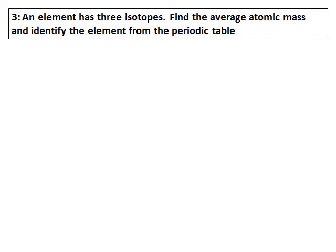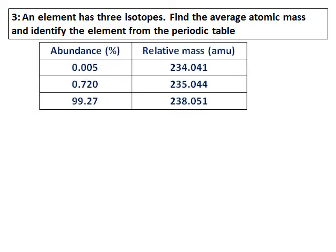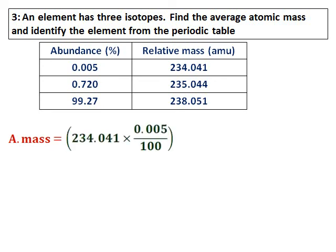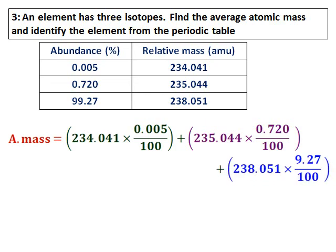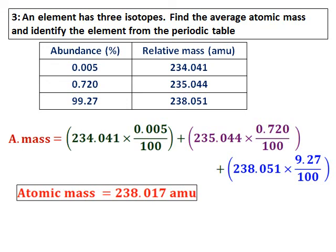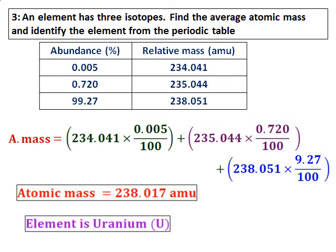The next question: an element has three isotopes. Find the average atomic mass and identify the element from the periodic table. The percentage abundance and relative mass are given in the table. This is similar to the previous questions — use the same formula and calculate the atomic mass. The only difference is that we have three isotopes. After calculating, refer to the periodic table. When you get an atomic mass of 238, you will realize the element is uranium.